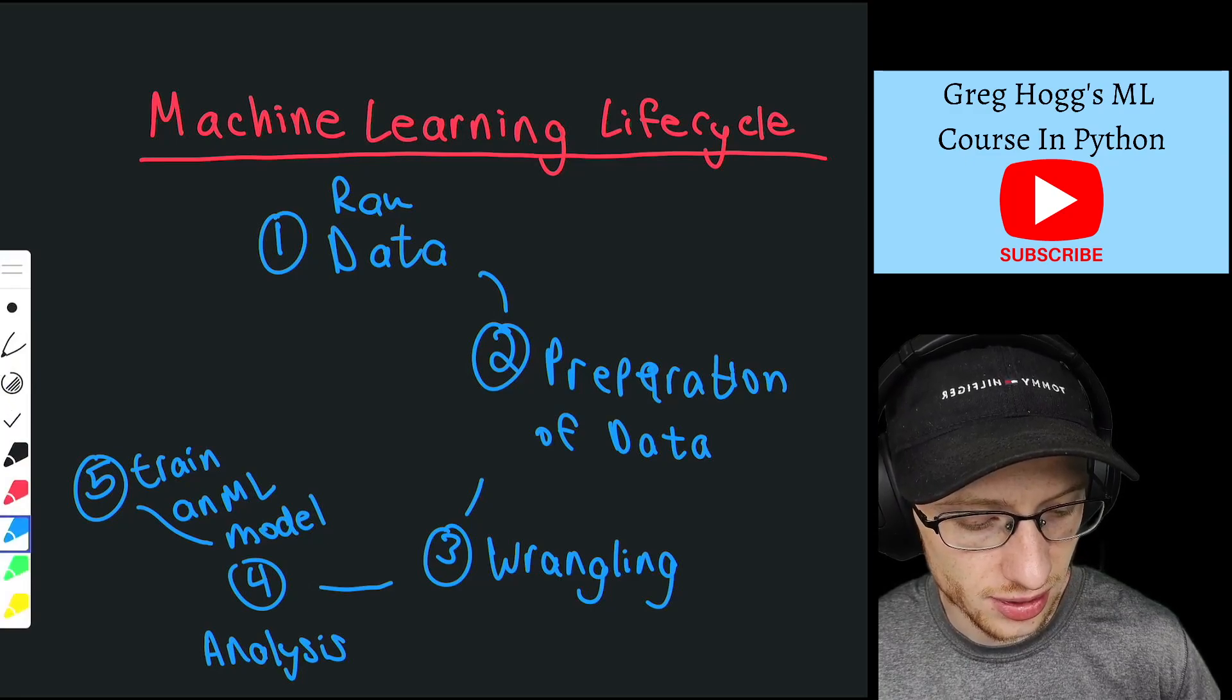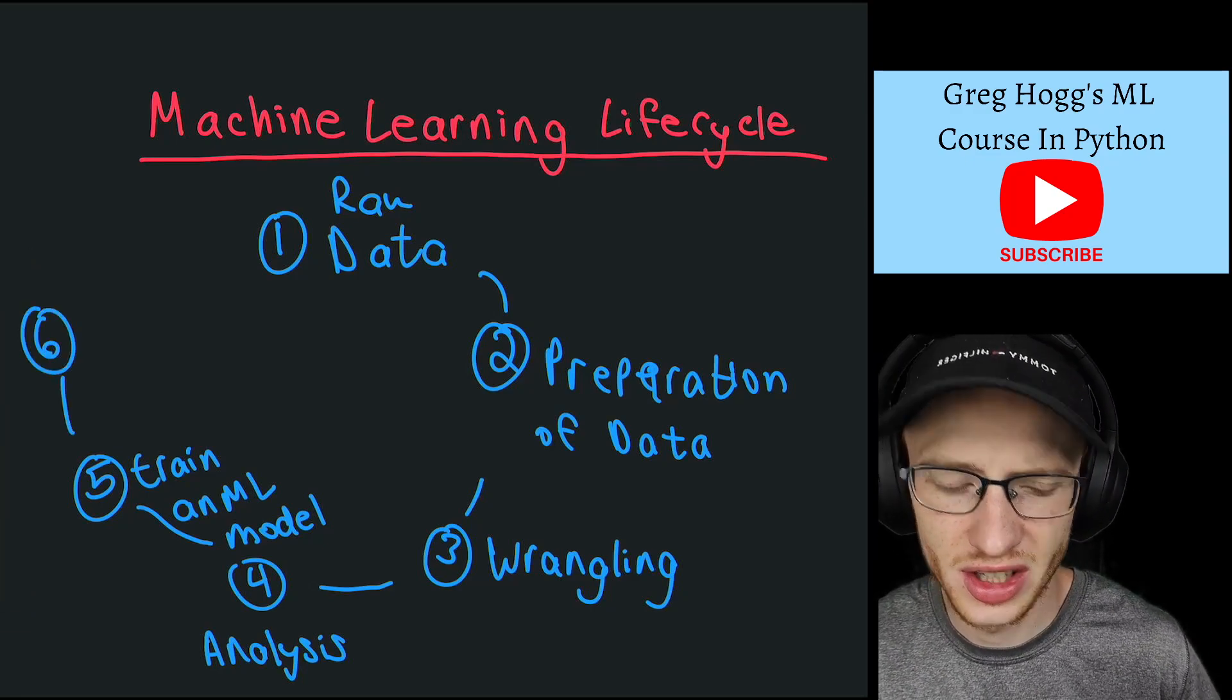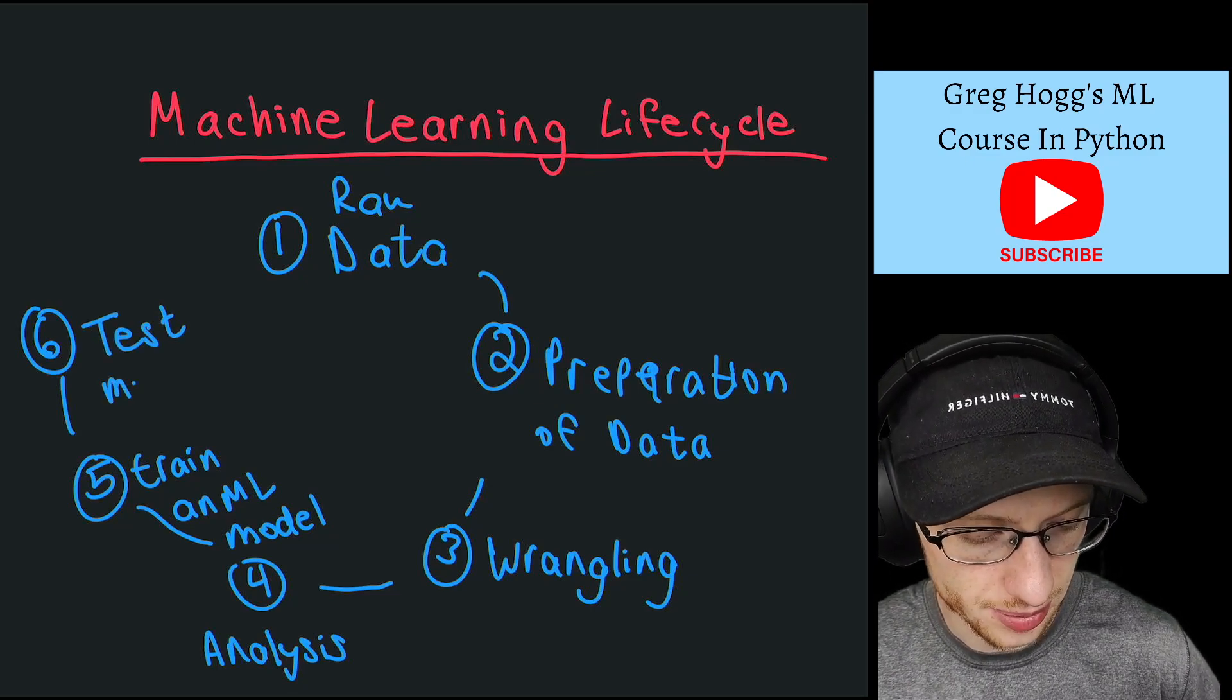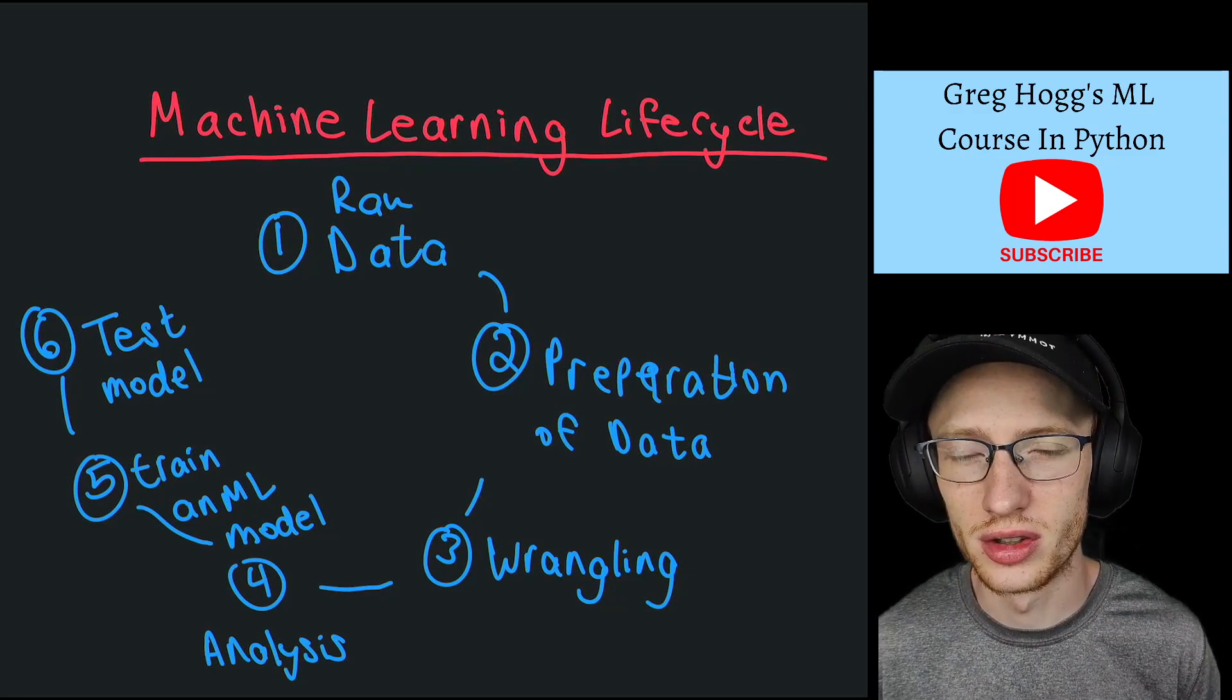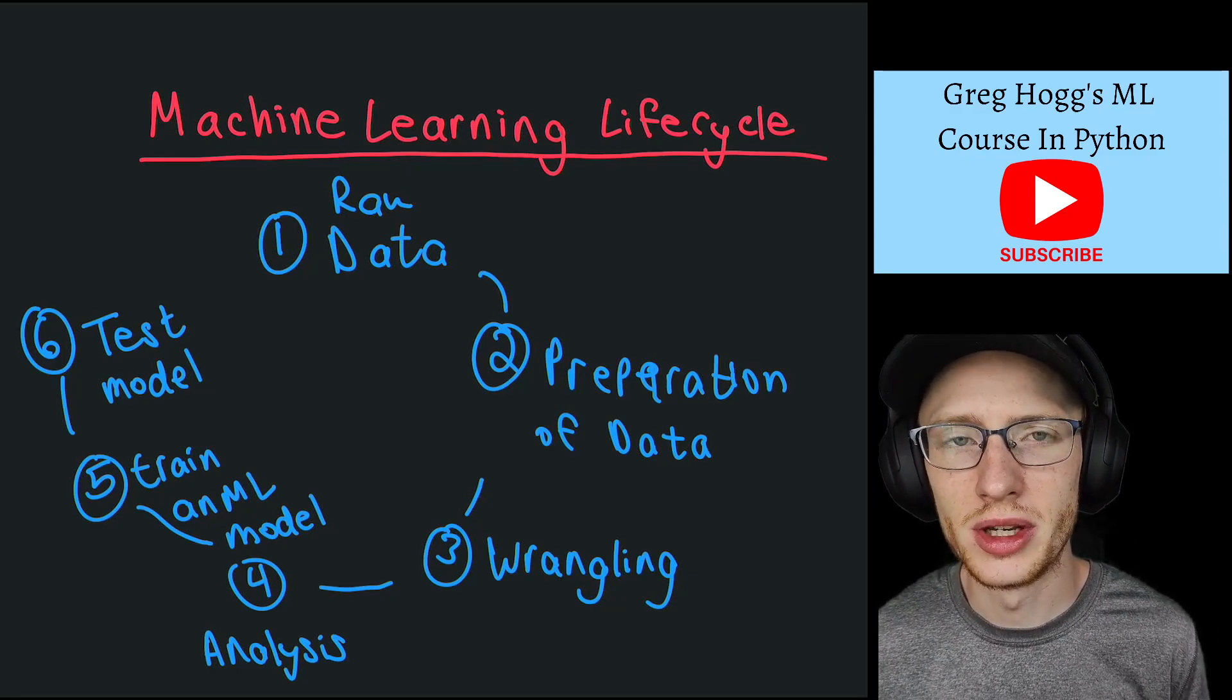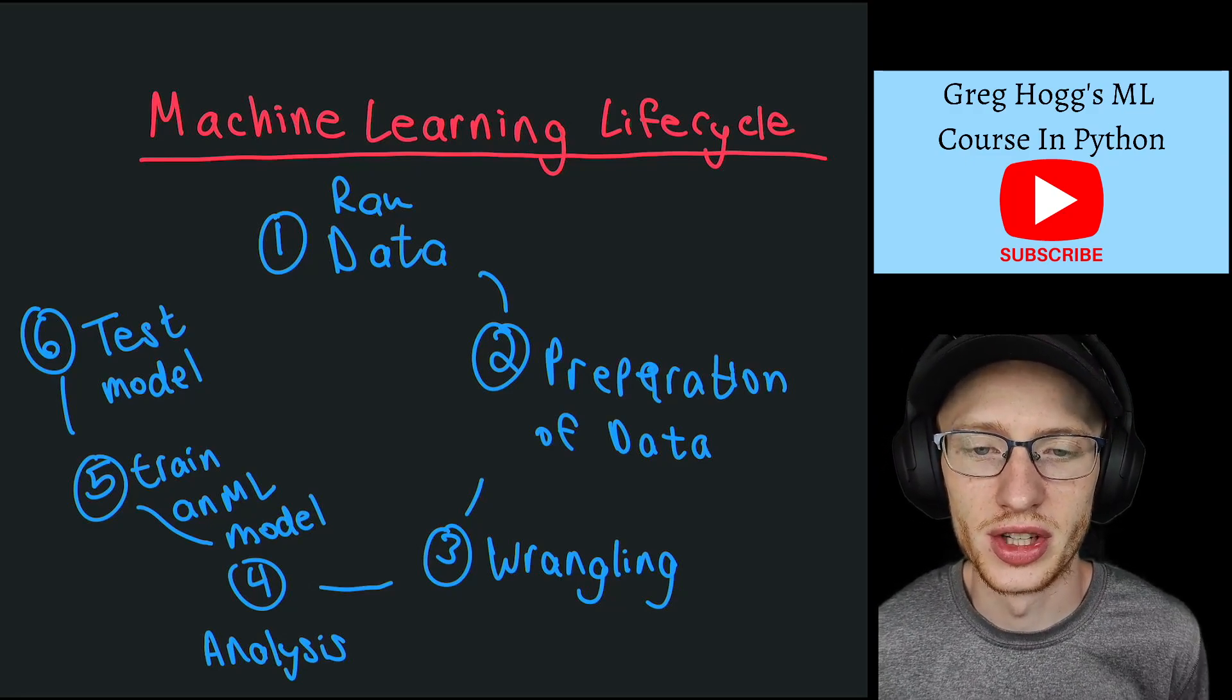So after we do that, we have step six, which it's kind of weird here, I'll actually draw a bit of a feedback loop which will make sense shortly. Test model. So the point of training a model is to make it get good at doing something, get the algorithm to get good at doing something and the machine to do something. But then testing the model, that's making sure that it's actually going to do its job.